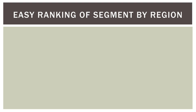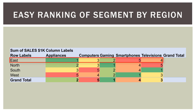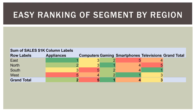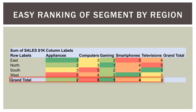You can also rank the segment by region. In the east, appliances ranked first, gaming second, computers third, televisions fourth, and smartphones last. In the west, smartphones were first, gaming second, televisions third, computers fourth, and appliances last. Overall, gaming was first, appliances second, televisions third, smartphones fourth, and computers fifth. By using ranking broken up by region and comparing to the grand total, you can see where everything fell with one or two clicks of your mouse.